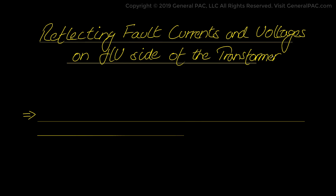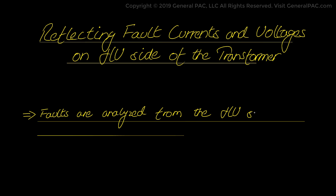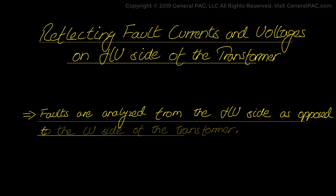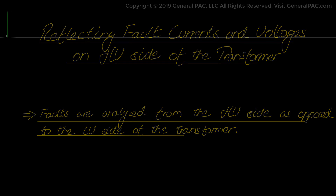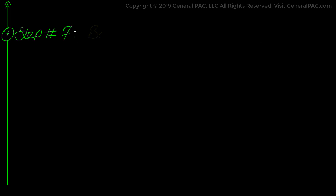This is the first video in Part 4 in the series of Fault Analysis in Power Systems. In this video we will see how faults are analyzed from the high voltage side as opposed to the low voltage side of the transformer, which we have done in previous videos. This is step number 7 in our fault analysis methodology, which was discussed in Part 2A, and serves as an additional bonus concept.